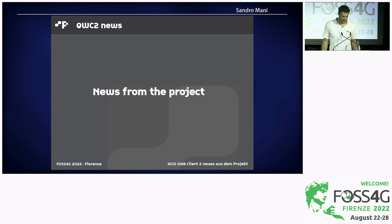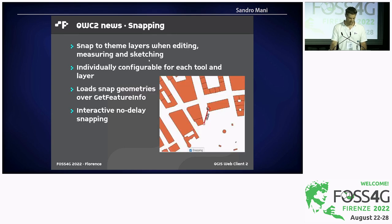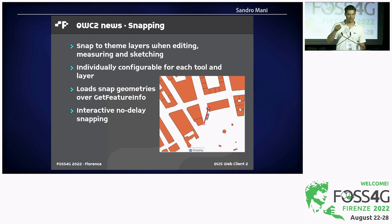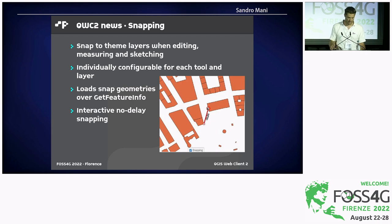Now for the news — what's been going on in the past year. It's been a pretty interesting year with a lot of new things. The first is the snapping functionality. This allows you, while editing, drawing, or measuring, to snap against other datasets or layers in the QGIS project, or also local drawings created by redlining in the web client. It works by building up a cache of features over GetFeatureInfo for the current map extent, allowing no-delay interactive snapping against all geometries visible in the map for the configured snap layers.